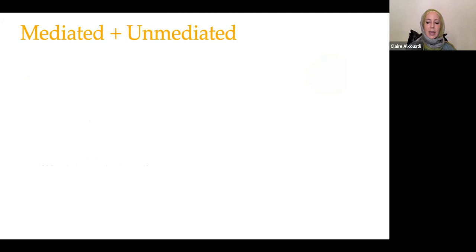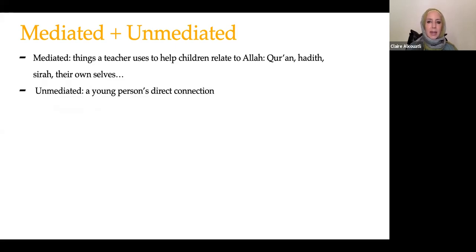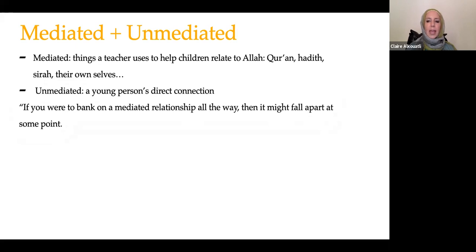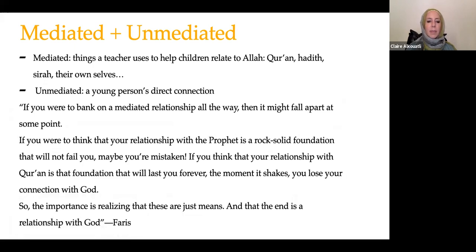Ferris pointed out that even transcendent pedagogies can have two particular dimensions. One is mediated — things a teacher uses to help children relate to Allah: Quran, Hadith, Sirah, and their own selves. We use these things to help a child mediate a relationship with God. Then there are unmediated pedagogies — pedagogies that help a young person foster a direct connection with Allah. He said: if you bank on a mediated relationship all the way, it might fall apart. If you think your relationship with the Prophet is a rock-solid foundation that will not fail you, maybe you're mistaken. The moment the Quran shakes, you lose your connection with God. So these are just means, and the end is a relationship with God.